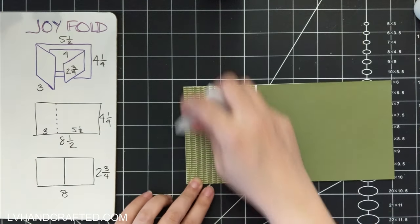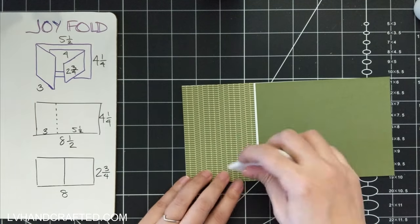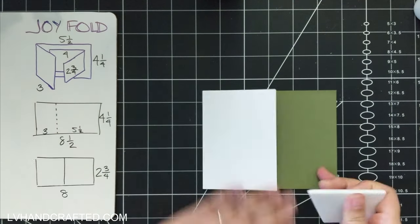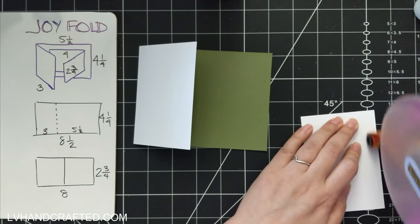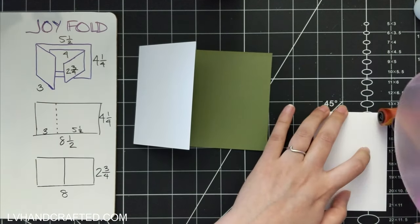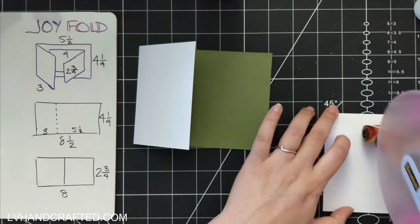So that solid forest green color, that's cut to 4¼ high by just shy of 5½ inches wide. And the reason why it's just shy of 5½ is because you don't want to have your paper cross over that fold.